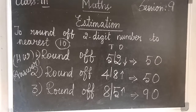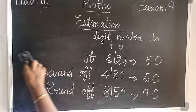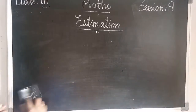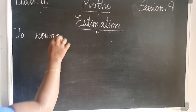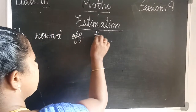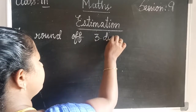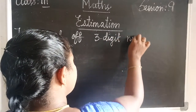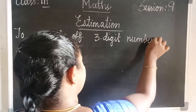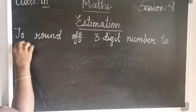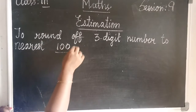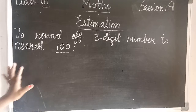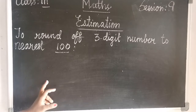Okay children, let's see the next topic: rounding of three-digit numbers. Round a three-digit number to the nearest hundred. To round a three-digit number to the nearest hundred.